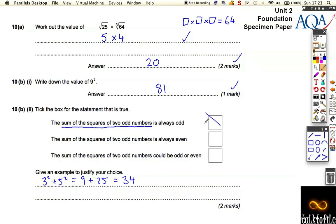So it's definitely not this one, it's definitely not that one because it's not always odd. We've shown it's even, so it can't always be odd. Now is it sometimes or is it always?